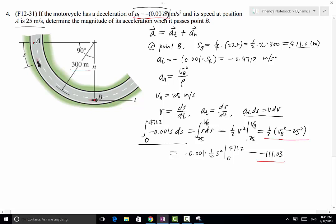Therefore, we have one equation with only one unknown, which is v_B. So from there we can solve for v_B. That v_B equals to 20.07 m per second.